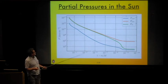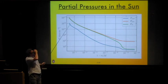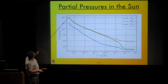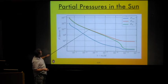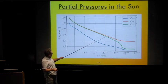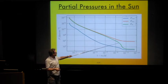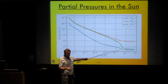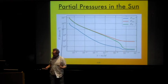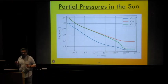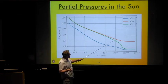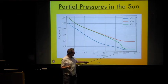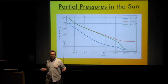Looking at the ion and electron pressures, they are very comparable throughout most of the star. But as we get out towards the very superficial layers, the electron pressure starts to drop away. The electrons are still behaving like an ideal gas here — no degeneracy effects. So why do we run out of electron pressure support towards the surface?